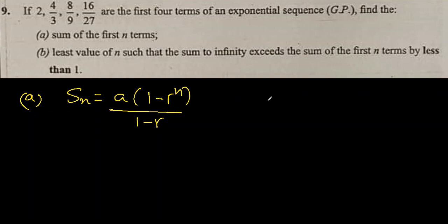Let's confirm. So let's divide 4/3, the second term, by the first term. So a_2 divided by a_1, that's what we do to find r. So it will be 4/3 multiplied by 1/2.